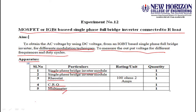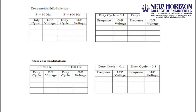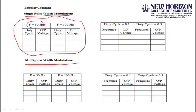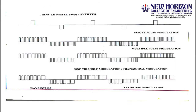There are several kinds of pulse width modulation. The first is single pulse width modulation, the second is multi pulse width modulation, the third is trapezoidal modulation, and the fourth is staircase modulation. The tabular column structure is the same for all: one table has constant frequency with changing duty cycle, and another has constant duty cycle with changing frequency.